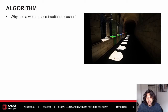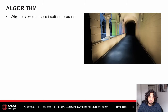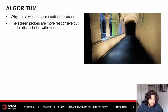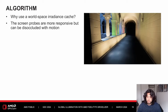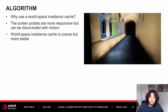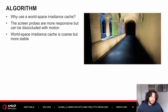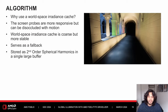But if we have screen probes, why have a world space irradiance cache? While screen probes are responsive, they can also be noisy during disocclusions, as the probes have to restart accumulation from scratch, leading to boiling artifacts. The world space cache is more coarse but also more stable and persistent, making it an ideal fallback when screen probes fail. These are stored as second-order spherical harmonics — 9 coefficients per color channel — in one larger buffer common to every Brixelizer cascade.